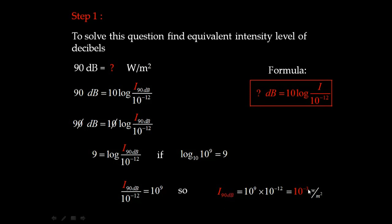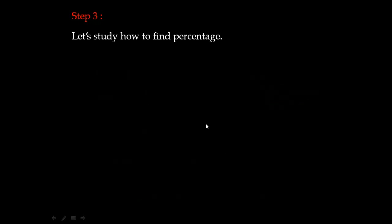Step 2: find the intensity level of 80 decibels. Following the same steps, 80 decibels simplifies to log(I / 10⁻¹²) = 8, so I₈₀ = 10⁻¹² × 10⁸ = 10⁻⁴ watts per meter squared.